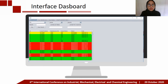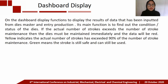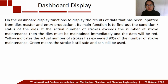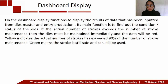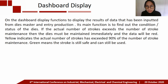This is the interface of the Dashboard. The dashboard displays the results of data inputted from Dice Master and Entry Production. Its main function is to show the condition or status of all dice. If the actual number of strokes exceeds the number of stroke maintenance, the dice must be maintained immediately and the data will appear red. Yellow indicates the actual number of strokes has exceeded 90% of the stroke maintenance number. Green means the stroke is still safe and can still be used.